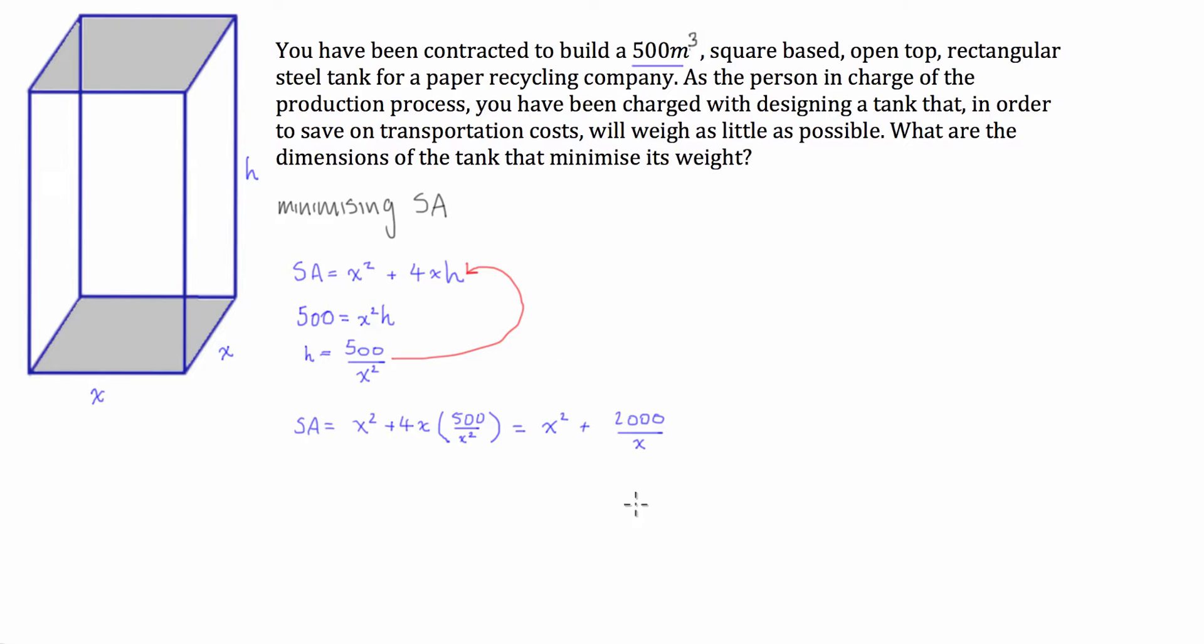So once we've done this, this is our surface area of the prism, which we're trying to minimize. We have to then take the derivative, so we're going to take the derivative of the surface area with respect to X.